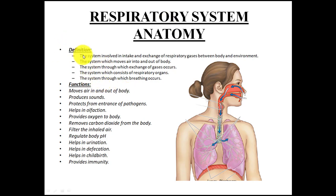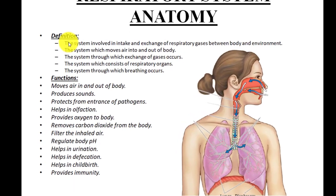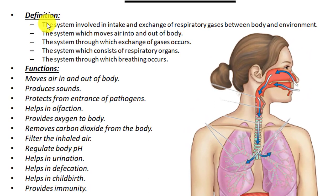The first definition of the respiratory system: the system involved in intake and exchange of respiratory gases between the body and the environment. When we inhale or exhale gases, we inhale gas from the environment and exhale gas to the environment. This gaseous exchange between the environment and our body is done by the respiratory system, and those gases exchanged are called respiratory gases.